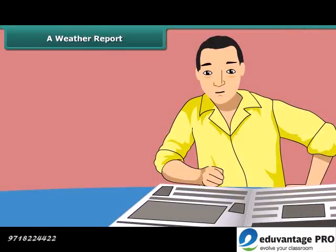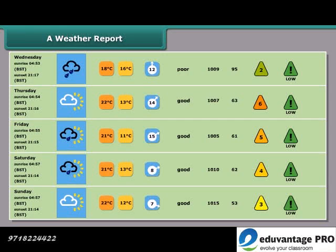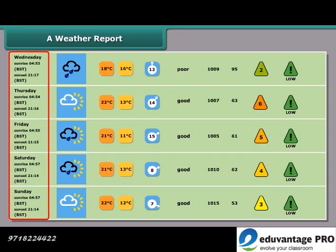Rachel is looking at a weather report in a newspaper. Here is a weather report. As you can see from the report, the date, month and days are given in the first row of the table.